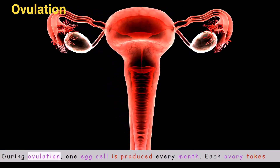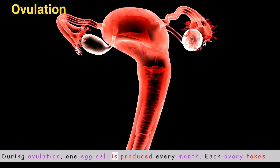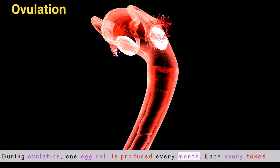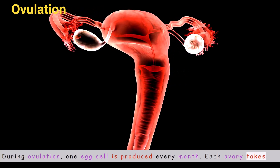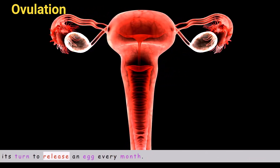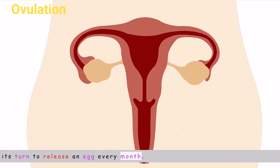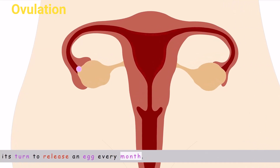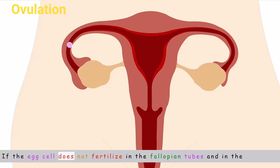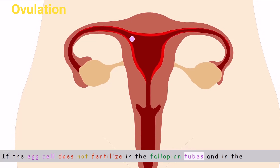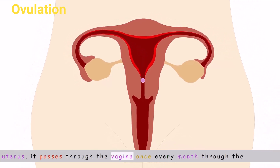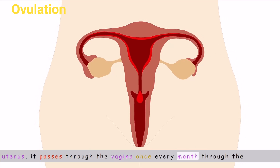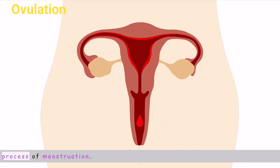During ovulation, one egg cell is produced every month. Each ovary takes its turn to release an egg monthly. If the egg cell does not fertilize in the fallopian tubes and in the uterus, it passes through the vagina once every month through the process of menstruation.